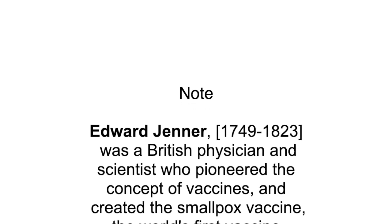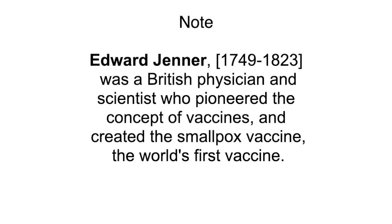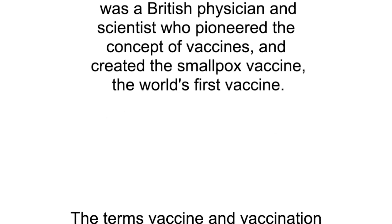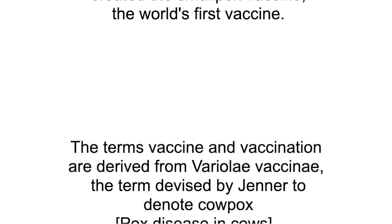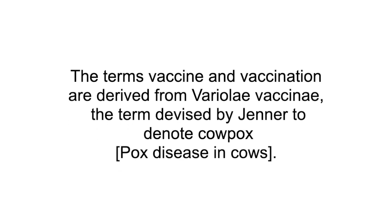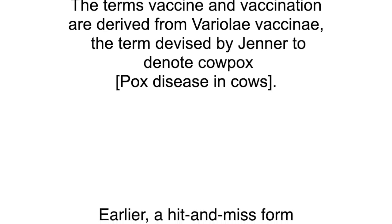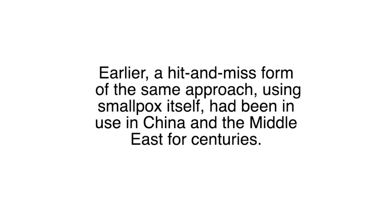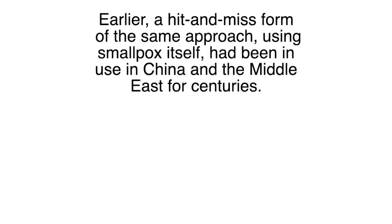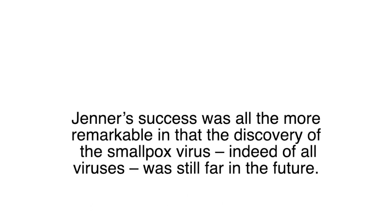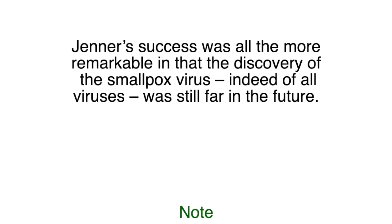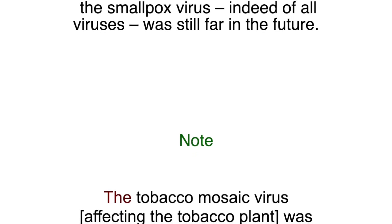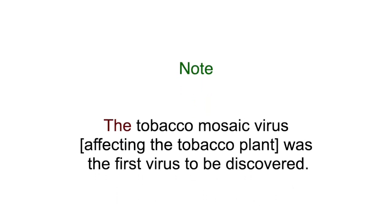Edward Jenner, born 1749, died 1823, was a British physician and scientist who pioneered the concept of vaccines and created the smallpox vaccine — the world's first vaccine. The terms vaccine and vaccination are derived from variolae vaccinae, the term devised by Jenner to denote cowpox. Earlier, a hit-and-miss form of the same approach using smallpox itself had been in use in China and the Middle East for centuries.